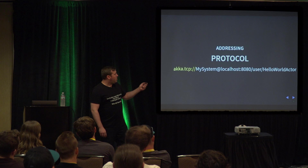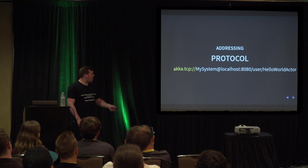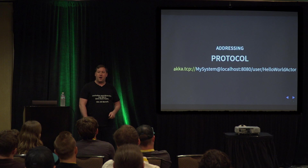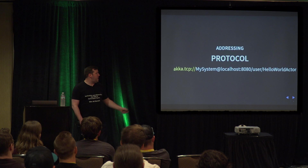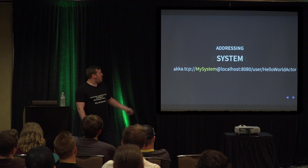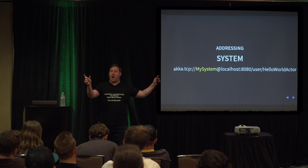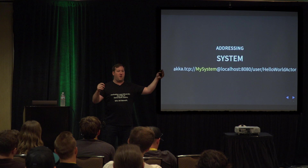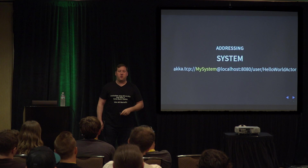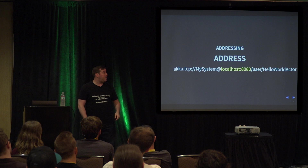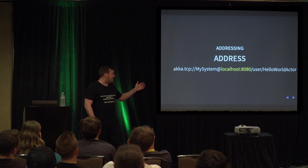Every actor has an address. The address includes: the protocol (TCP is the default for Akka.NET, though others like UDP are available), the name of the actor system, and the machine address where that actor lives. For example, localhost:8080. After that is the hierarchy within Akka.NET showing how to get to that actor.